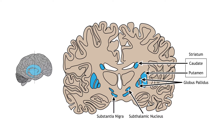The basal ganglia are primarily associated with motor control, since motor disorders such as Parkinson's or Huntington's diseases stem from dysfunction of neurons within the basal ganglia. For voluntary motor behavior, the basal ganglia are involved in the initiation or suppression of behavior and can regulate movement through modulating activity in the thalamus and cortex. In addition to motor control, the basal ganglia also communicate with non-motor regions of the cerebral cortex and play a role in other behaviors, such as emotional and cognitive processing.